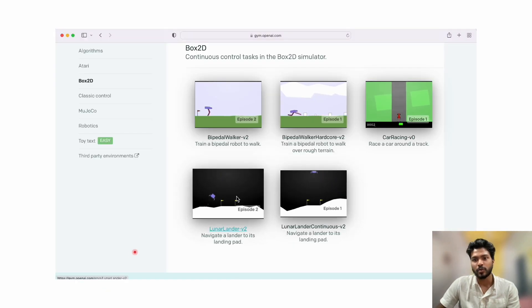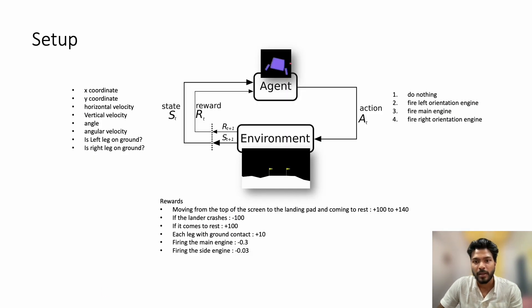The Lunar Lander is one of the environments provided by the OpenAI Gym Toolkit. The lander in purple is the agent and the moon is the environment. We will come up with a reinforcement learning based algorithm such that the agent achieves the maximum rewards at the end of one episode.